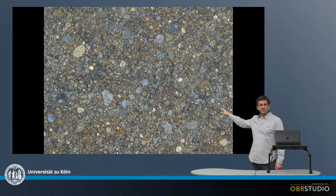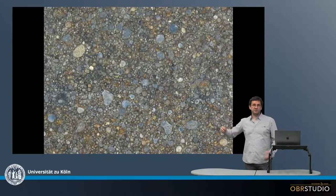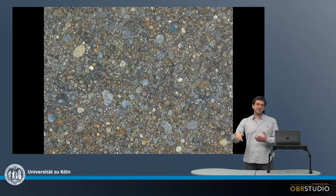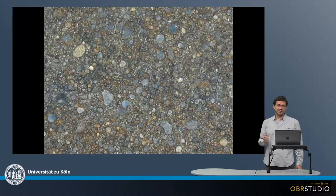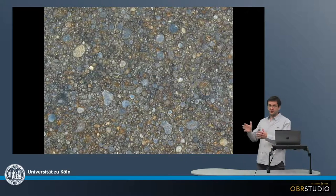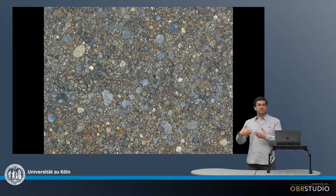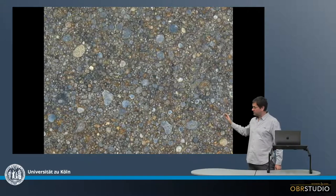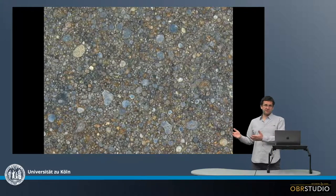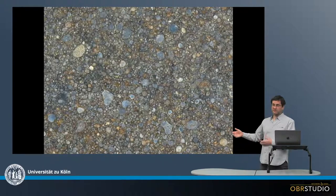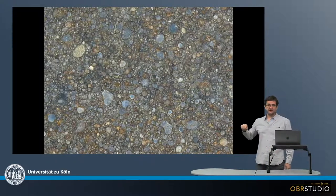All these chondrules that we can see here formed free floating individually in the protoplanetary disk a couple of millions of years before the planets formed. They then accreted together to form this meteorite, which means the parent body of this meteorite. If you would look at some different types of chondrites — carbonaceous chondrites or other ordinary chondrites — it would look essentially the same.